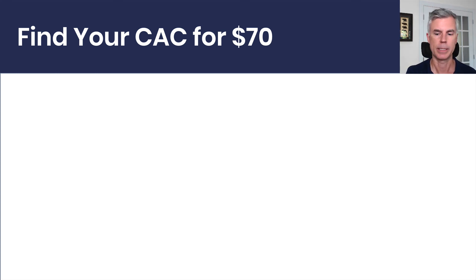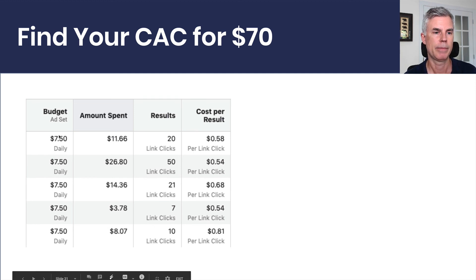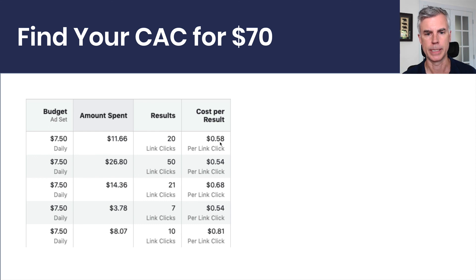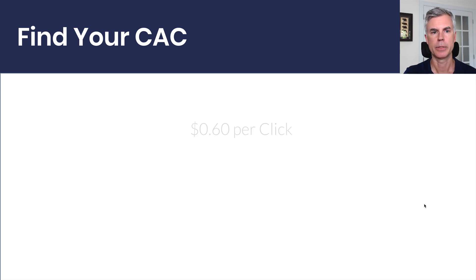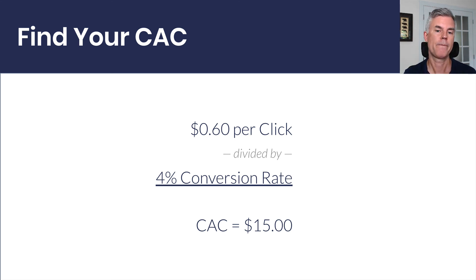For Rocket Proforma, I ran an experiment. I ran Facebook ads with a budget of $7.50 a day, spending a total of $70 across five ads. Most of my cost per clicks were in the $0.50 to $0.60 range — let's call it $0.60. At the same time, I tracked on my website the conversion rate by week, getting about 4% consistently. Using the formula: $0.60 per click divided by 4% conversion rate, my cost to acquire each customer is $15. It cost me $70 to figure out my CAC was $15. I encourage similar experimentation.